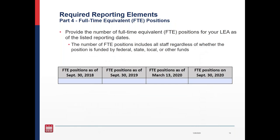The final section of the LEA Annual Report Form is on full-time equivalent, or FTE, positions. You'll need to list the number of FTEs for the following time periods: FTE positions as of September 30th, 2018; as of September 30th, 2019; as of March 13th, 2020; and as of September 30th, 2020. This section must be completed regardless of whether your LEA had CARES ESSER expenditures in FY20 — LEAs that received the CARES ESSER allocation but did not spend in FY20 still need to complete this section. The total number of FTE positions should include all staff regardless of whether the position is funded by federal, state, local, or other funds. One of the big goals of the CARES Act funding was to preserve jobs, so this information will help federal and other entities understand how CARES Act funding impacted employment.